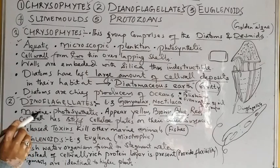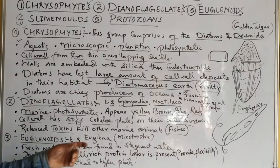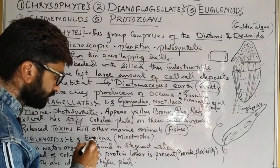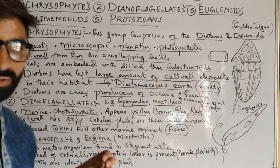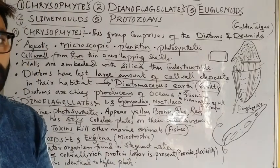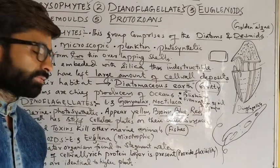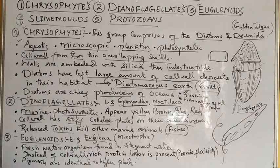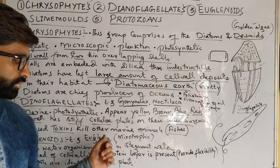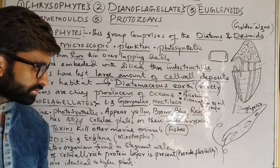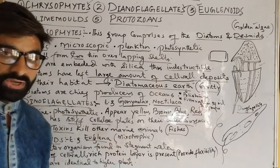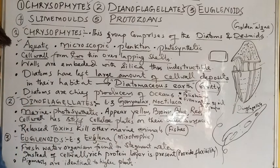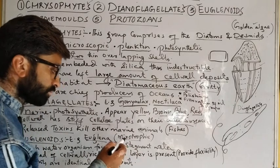Next we discuss the third group: euglenoids. The main example of euglenoids is Euglena. Euglena is a mixotrophic organism — it can carry out both autotrophic and heterotrophic modes of nutrition, which is why it is called mixotrophic.